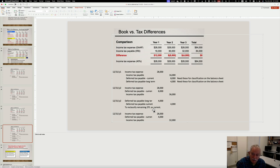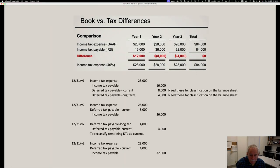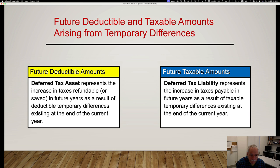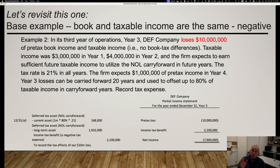Just to recap: future deductible on your tax return means you have a deferred tax asset; future taxable on your tax return means you have a deferred tax liability.